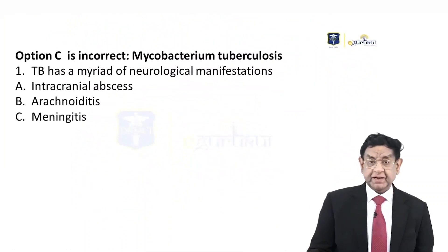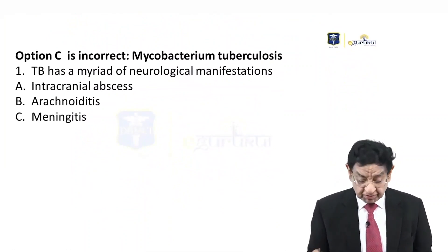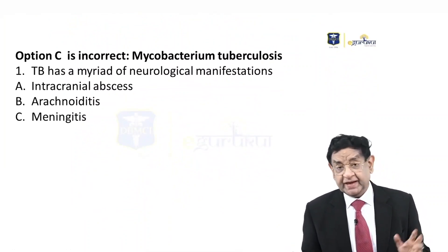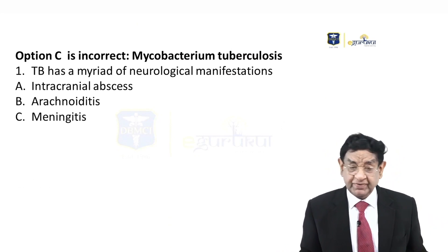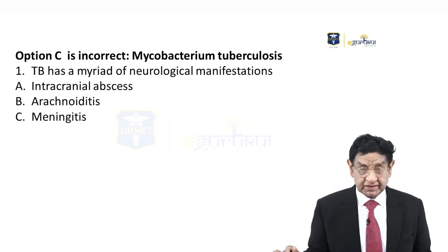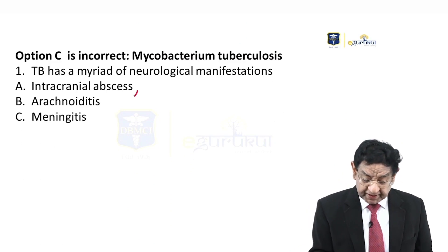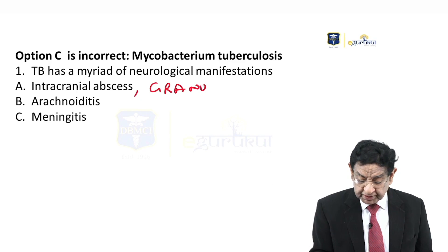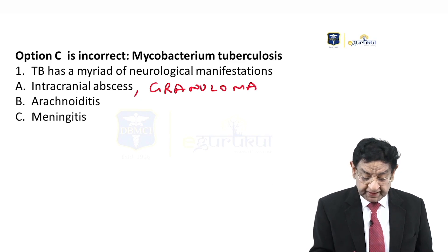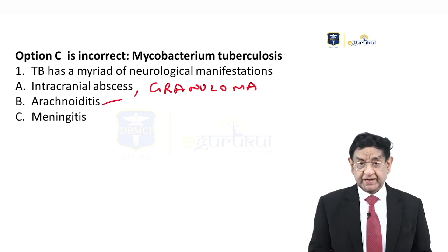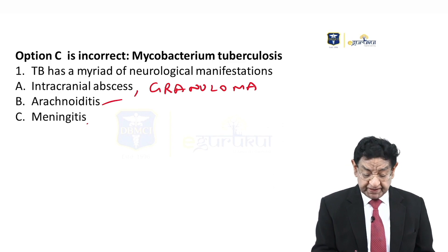Another option is Mycobacterium tuberculosis. Tuberculosis can spread to any organ in the body. As far as the nervous system is concerned, it can cause intracranial abscess, granuloma, arachnoiditis, and TB meningitis.